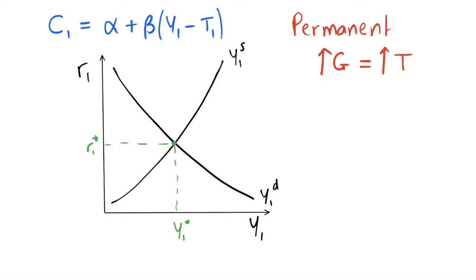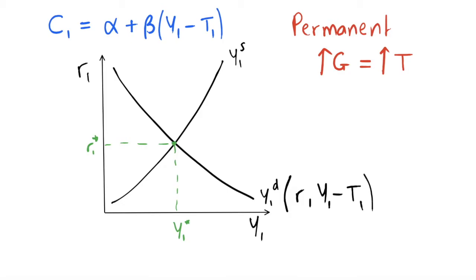For a permanent increase in government spending, our aggregate demand depends on government spending. We can write the aggregate demand function as a function of the interest rate — not the present value of income, because individuals are not forward-looking in the Keynesian model. Individuals make decisions based on their current income only, so we are no longer discounting period-two income. In the Keynesian model, individuals do not care about their future income.